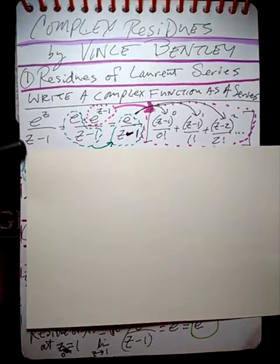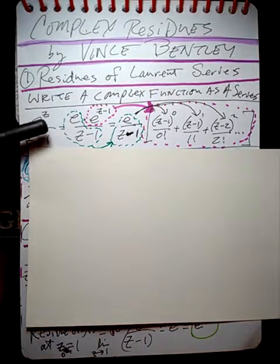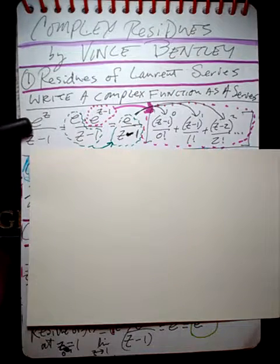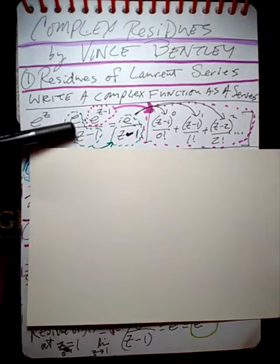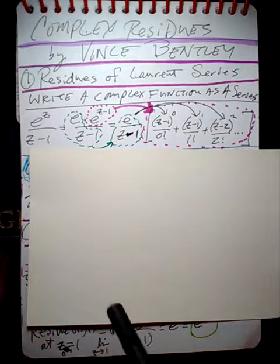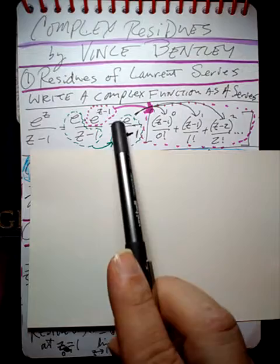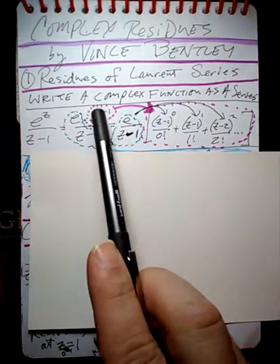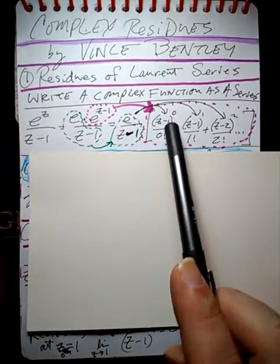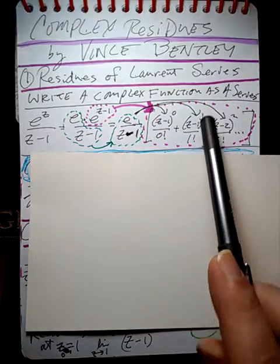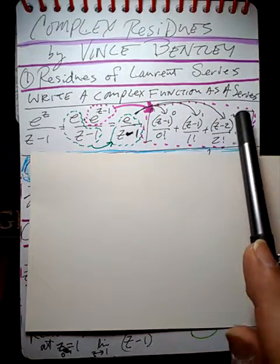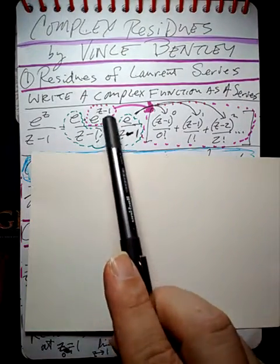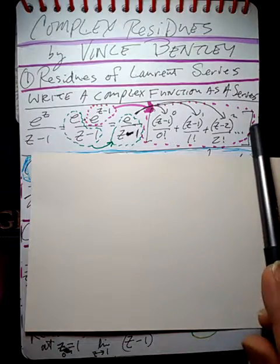We have e to the z over z minus 1. What we can do is pull out an e out of this function. So algebraically, of course, this is equal to this. And now that we have that, we can leave this alone, just left it alone. And then we'll expand this as a series right here. So e to something is something to the zero power divided by zero factorial plus something to the first power over one factorial plus something squared over two factorial and so on. So we expanded e to the z minus one as a series here.